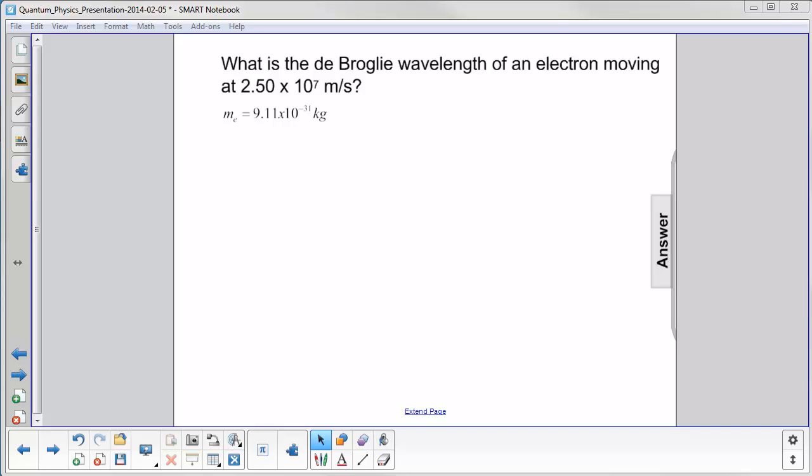What is the de Broglie wavelength of an electron moving at 2.50 times 10 to the 7th meters per second? We have the mass of the electron as 9.11 times 10 to the minus 31 kilograms.